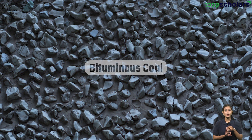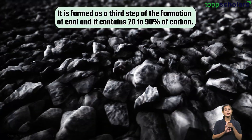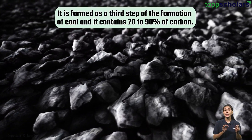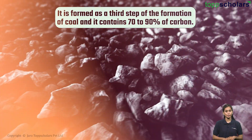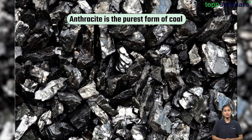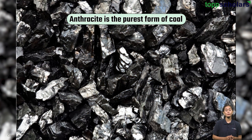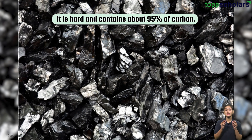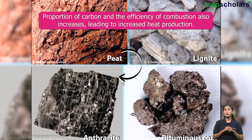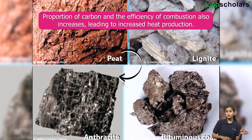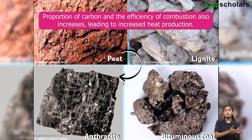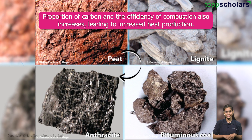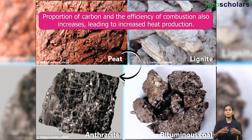The third type of coal is bituminous coal. This is formed as the third step of coal formation and contains 70-90% carbon. At the final step of coal formation, anthracite is formed, which is the purest form of coal. It is hard and contains 95% carbon. Going from peat to anthracite, the proportion of carbon and the efficiency of combustion also increases, leading to increased heat production.